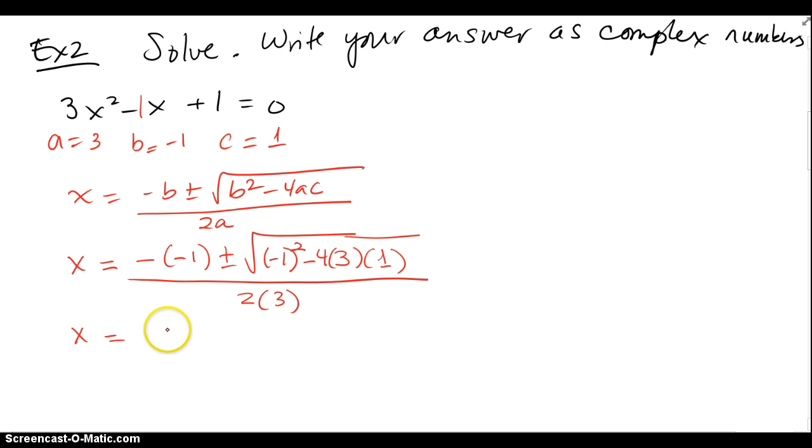x equals negative and negative make a positive 1, plus or minus square root of negative 1 squared is a positive 1, minus, these guys stay 4 times 3 as a negative 12.